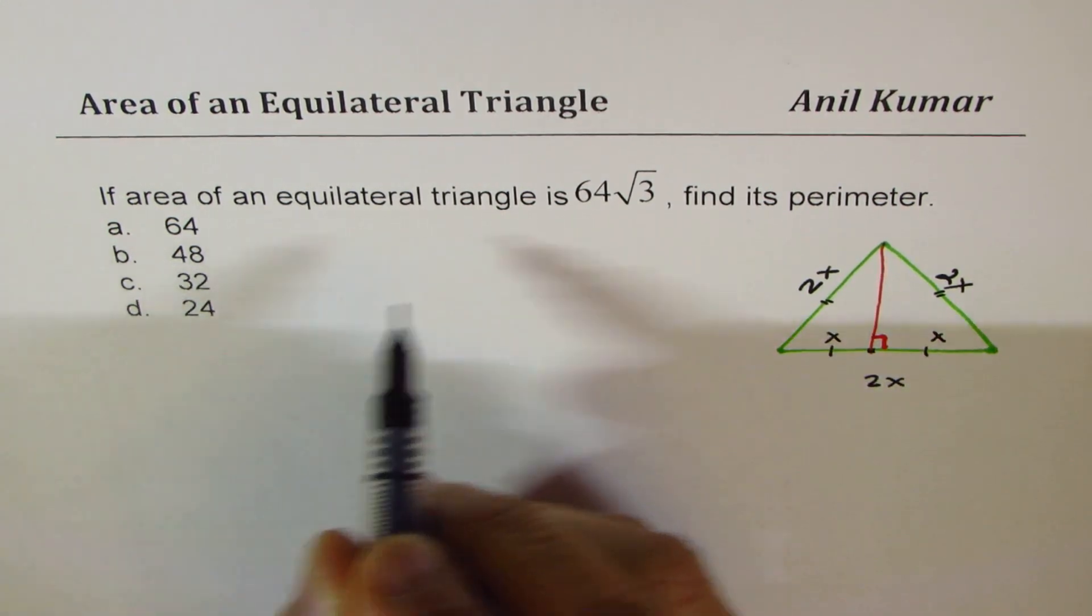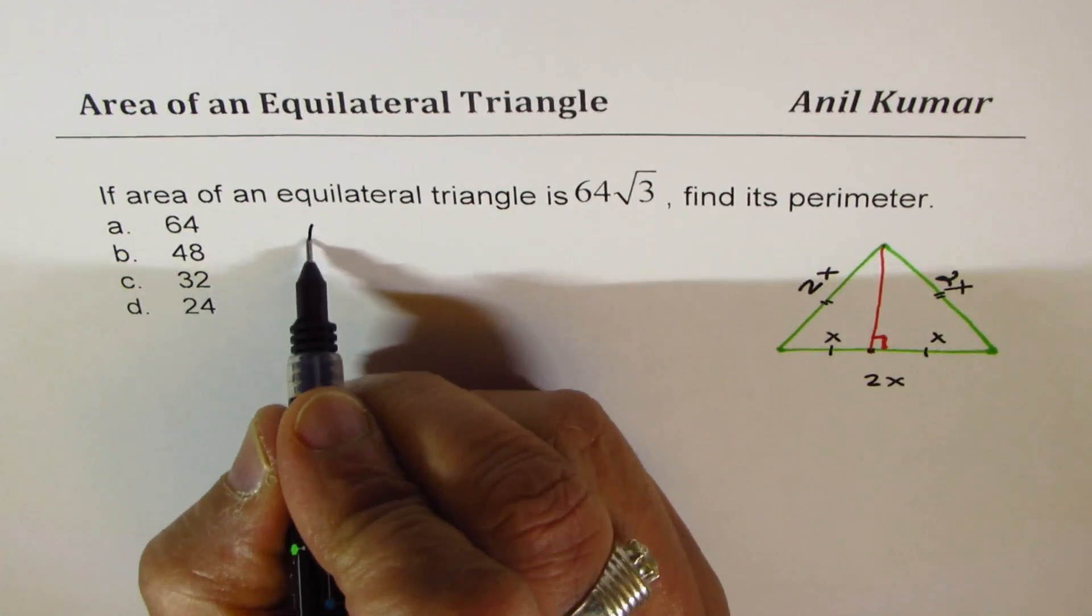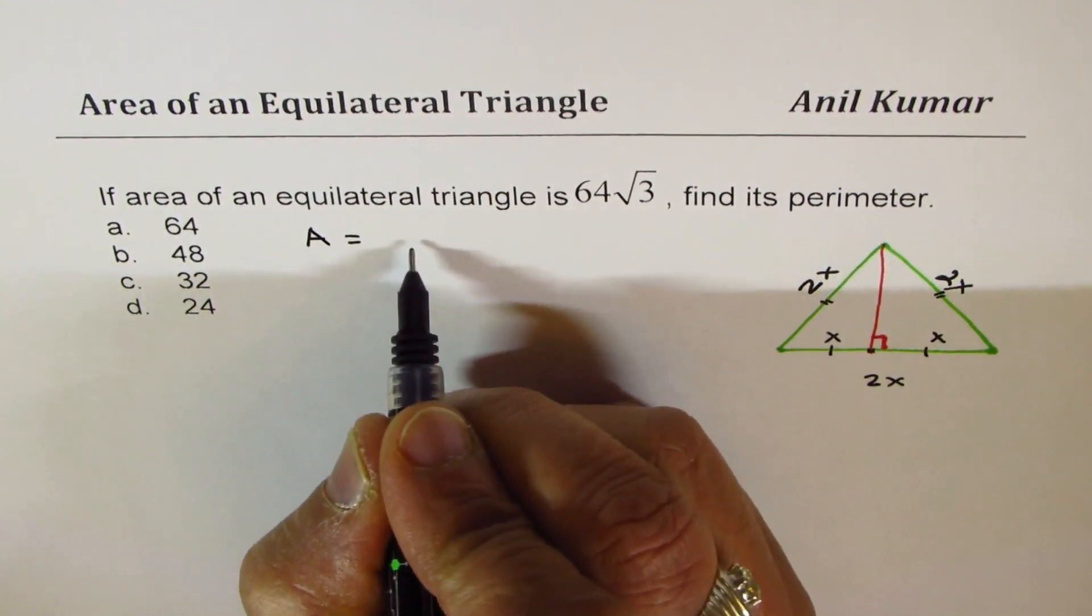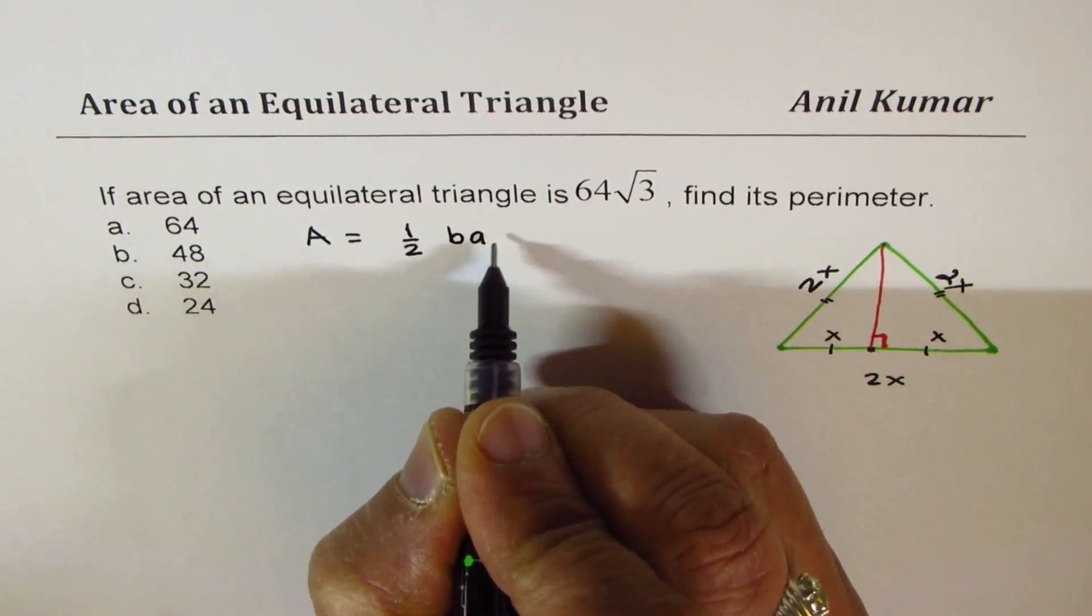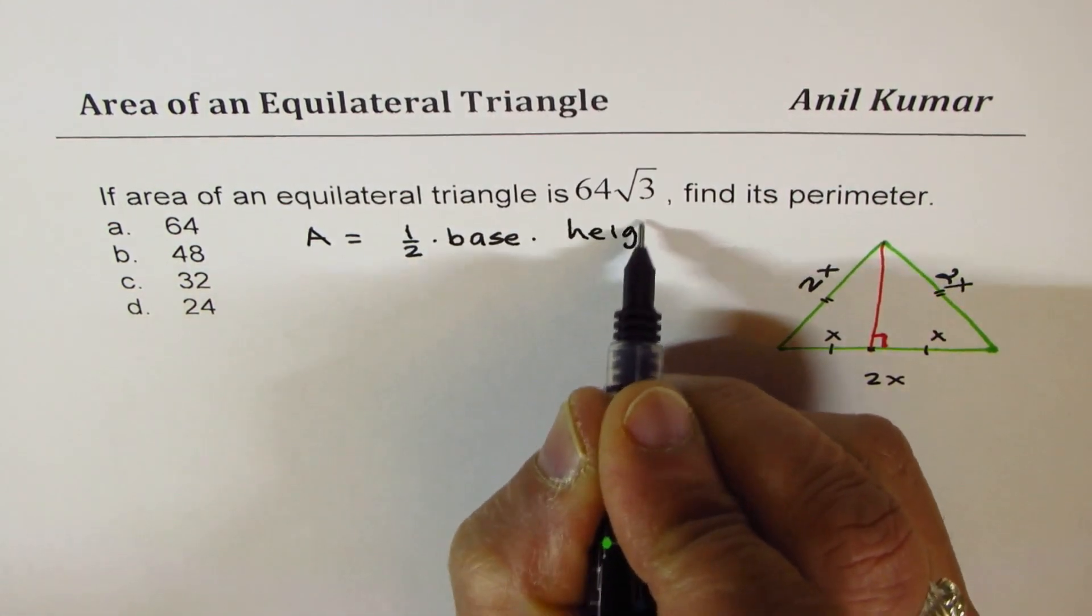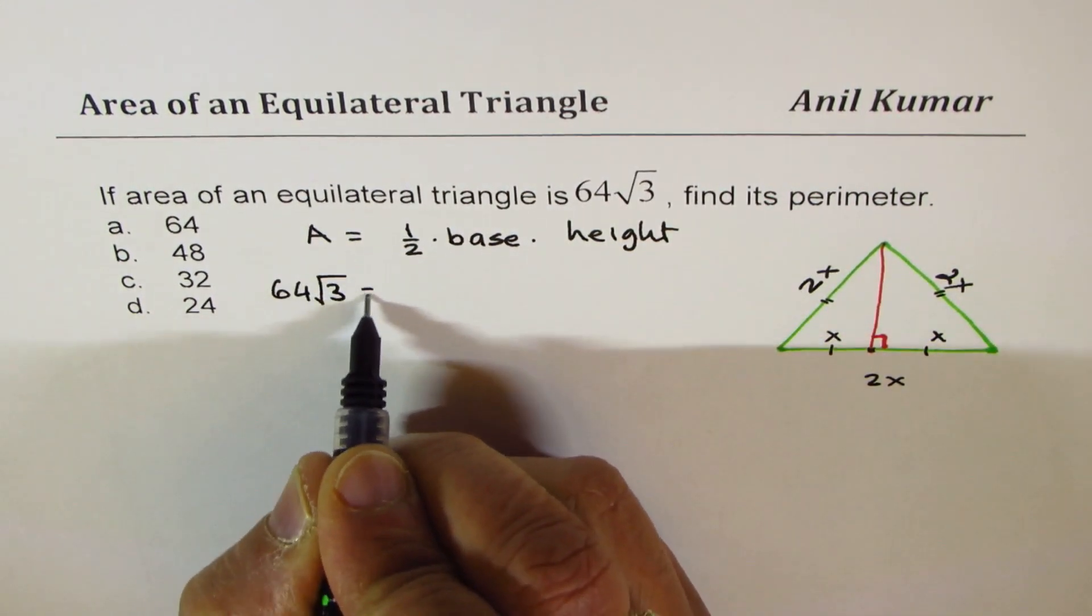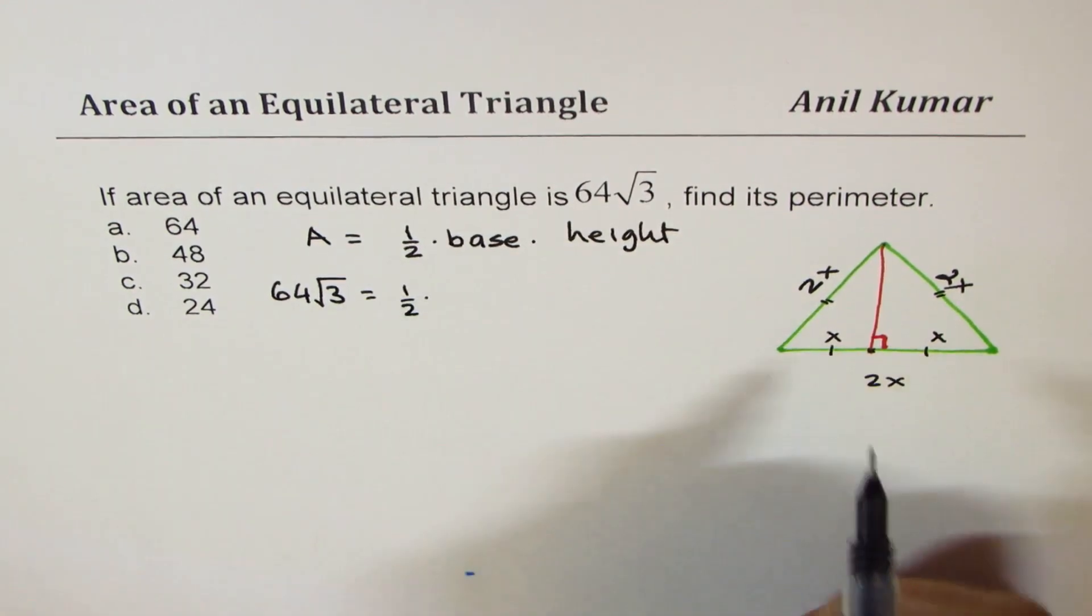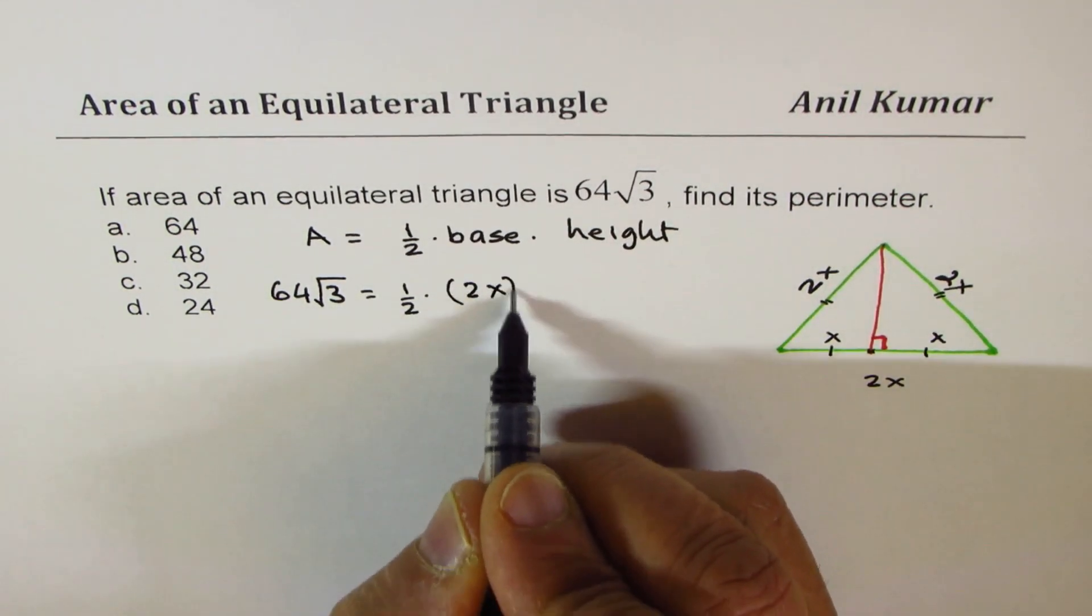Now what is given to us is that the area is 64 square root 3. So area equals to area of a triangle is half base times height. And we are given this area is 64 square root 3. Half of, in this case, the base is 2 times x. x could be any number. We have to really find that.